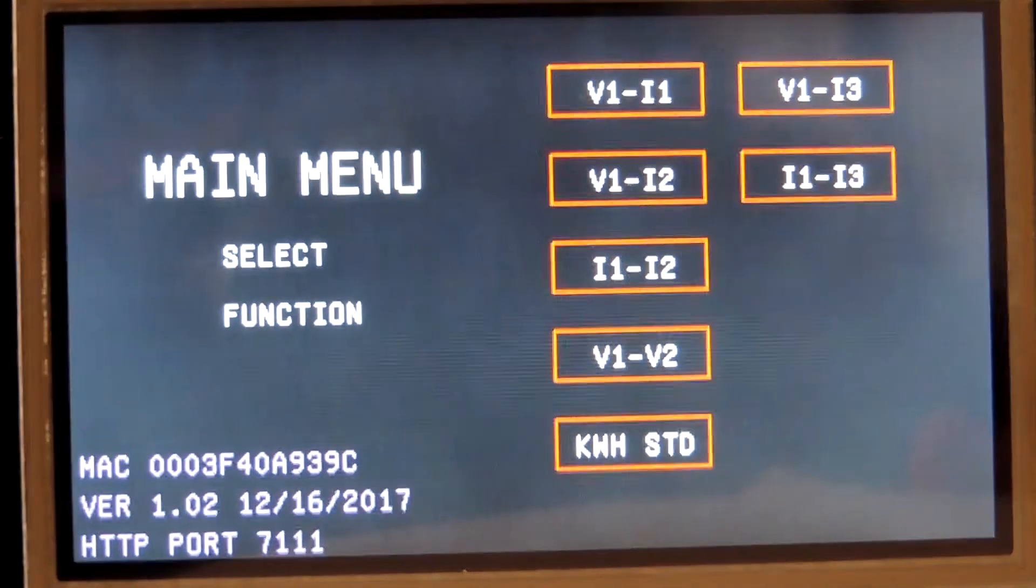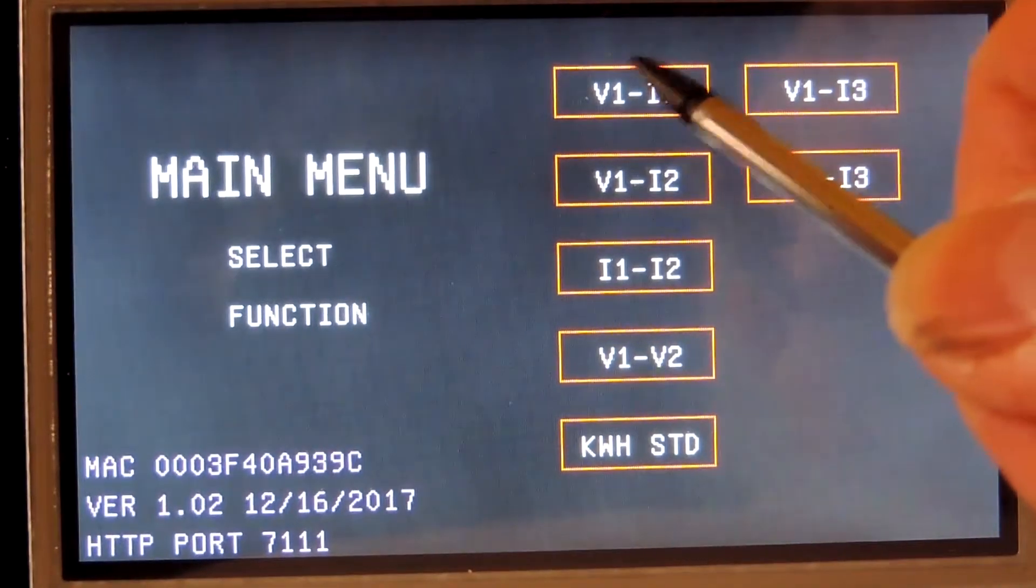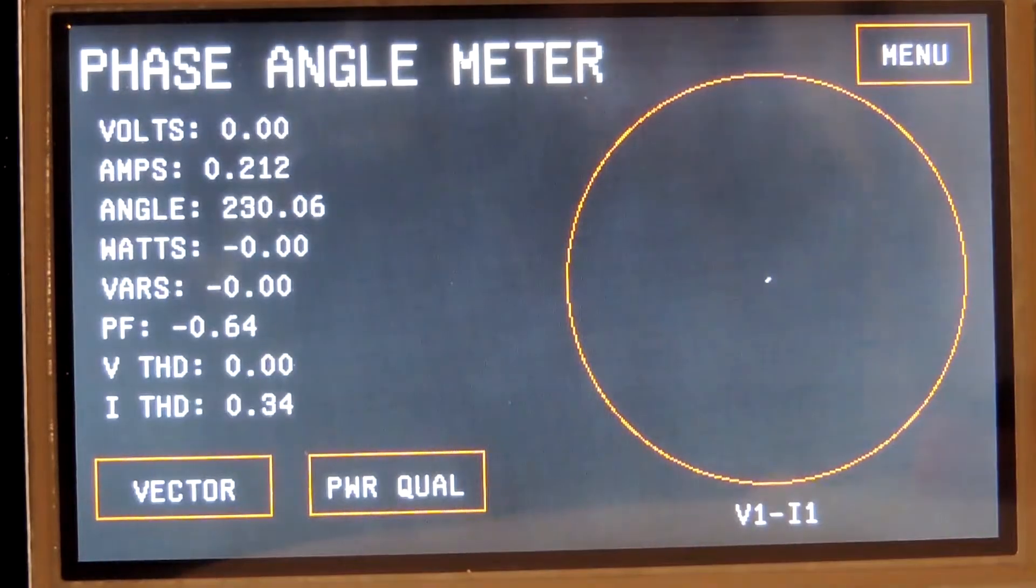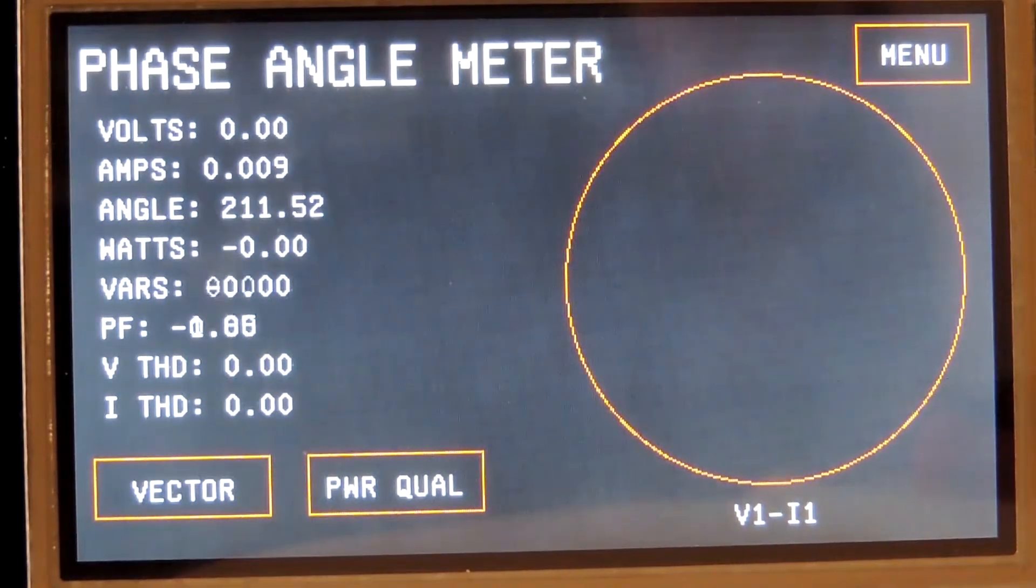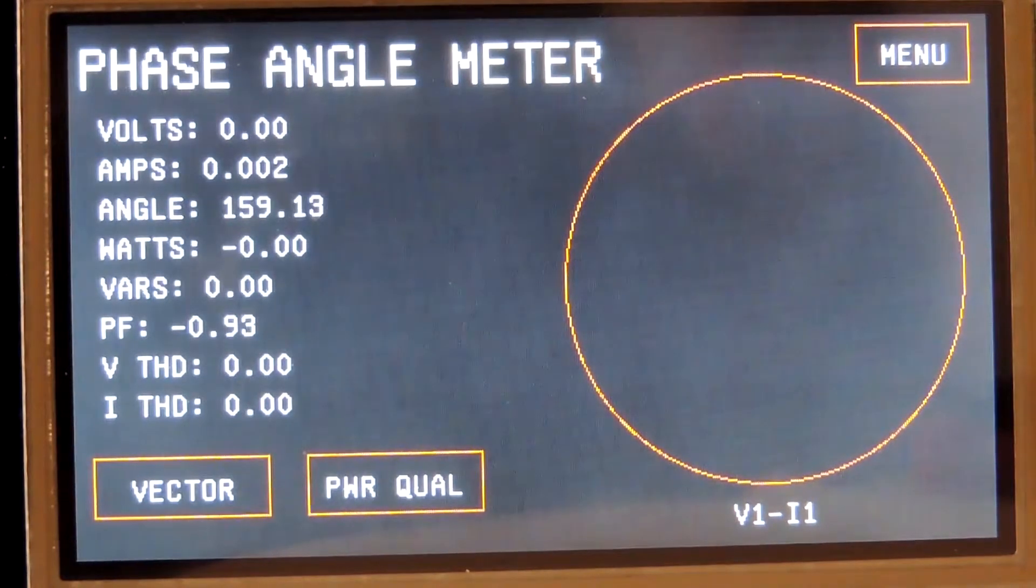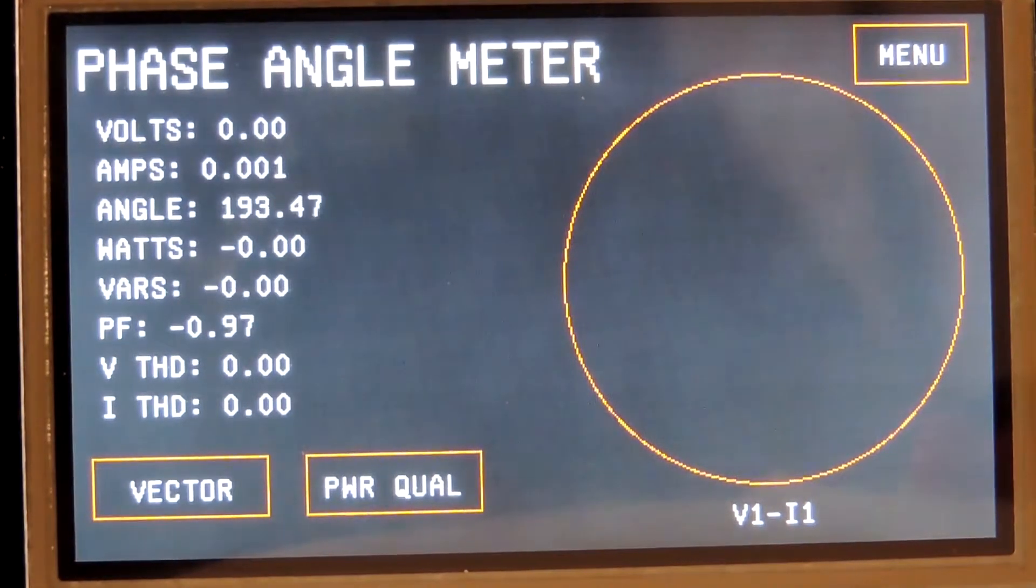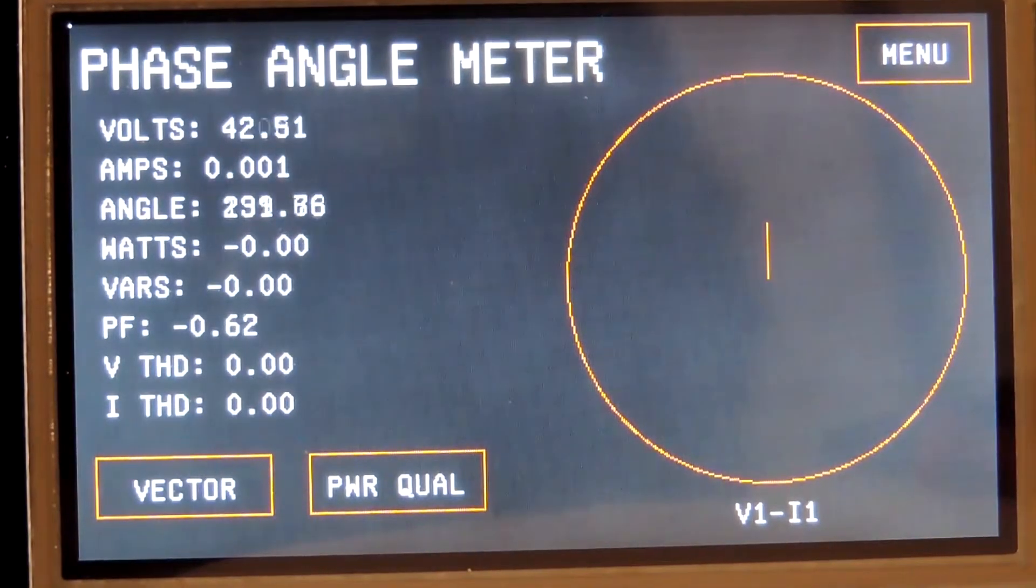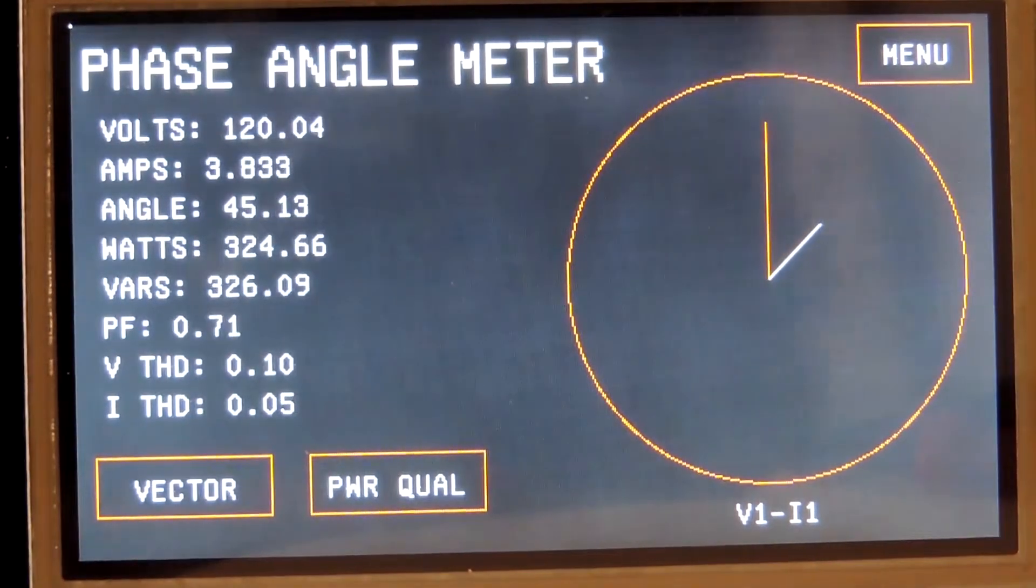First function we'll look at here, V1I1. This measures a voltage, a current, and the angle. The V1I2 mode is identical, except it uses the clamp-on input, so I won't go into that.